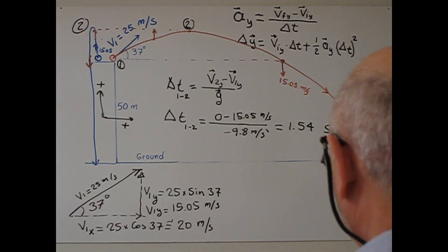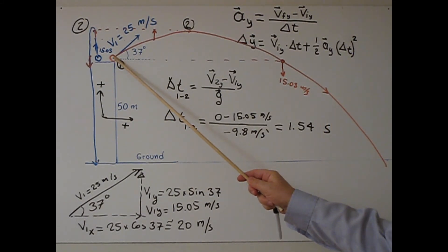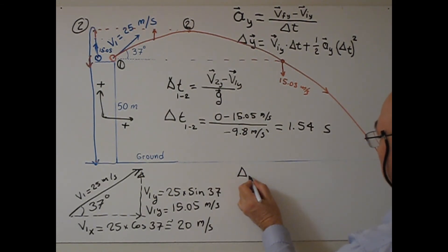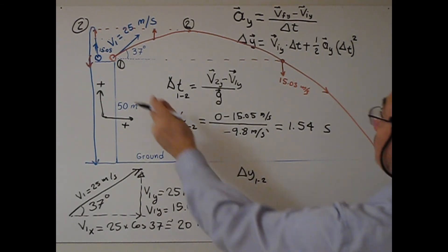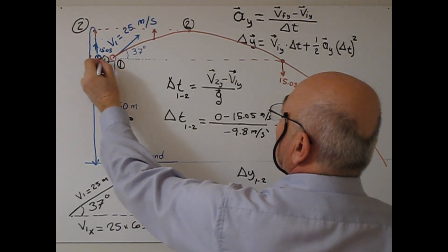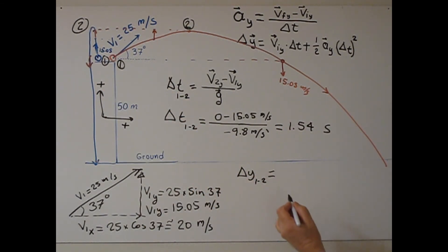To find the height of the ball from the roof to the maximum point, here, we use this second formula. Okay, so, delta Y, 1, 2. So, from 1 to 2, equal, will be, V1Y times, delta T, 1, 2, between 1 and 2, plus 1 over 2 G, delta T, 1, 2, square.